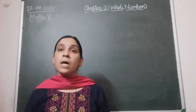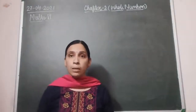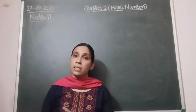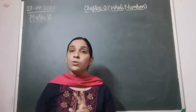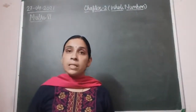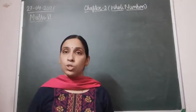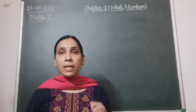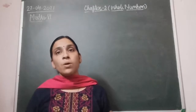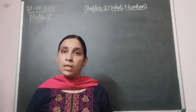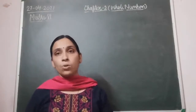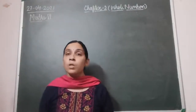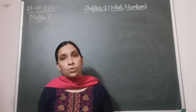Whole numbers are commutative under addition and multiplication, meaning we can add two whole numbers in any order, and in multiplication also we can multiply two whole numbers in any order and the result is the same. Then we have done associative property — three whole numbers can be added in any order, and it goes with multiplication also. After that we have done a few examples related to closure, commutative, and associative properties.